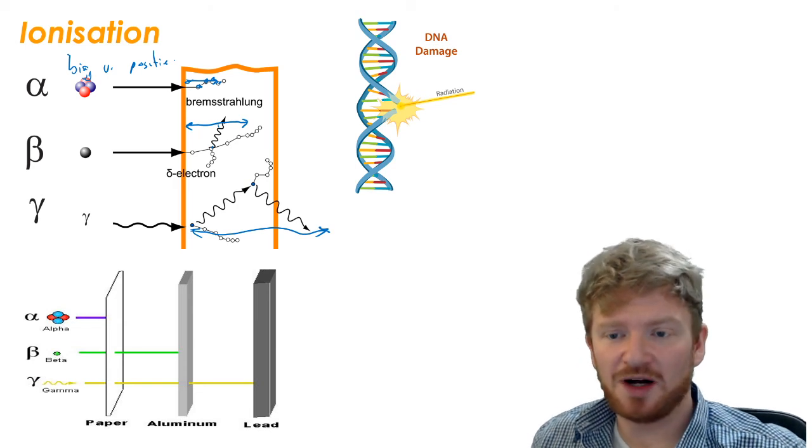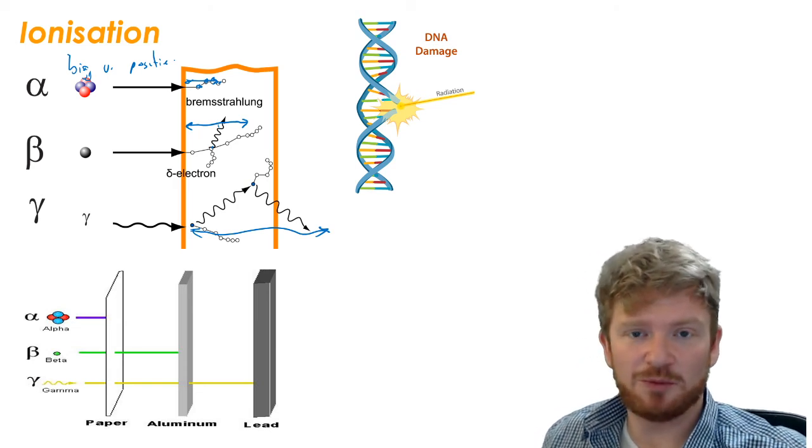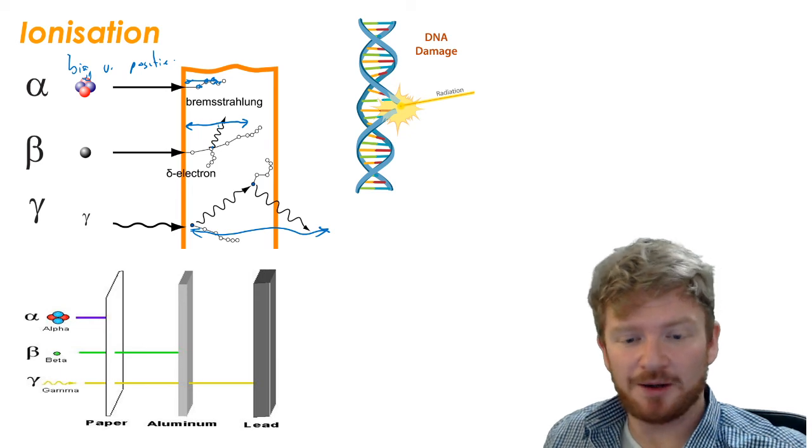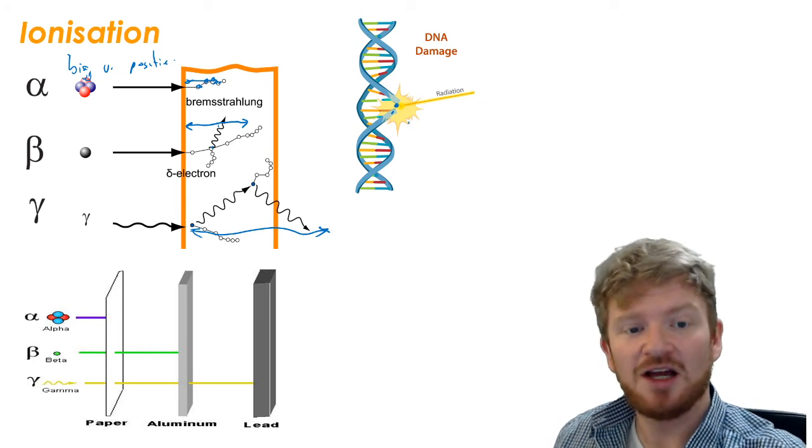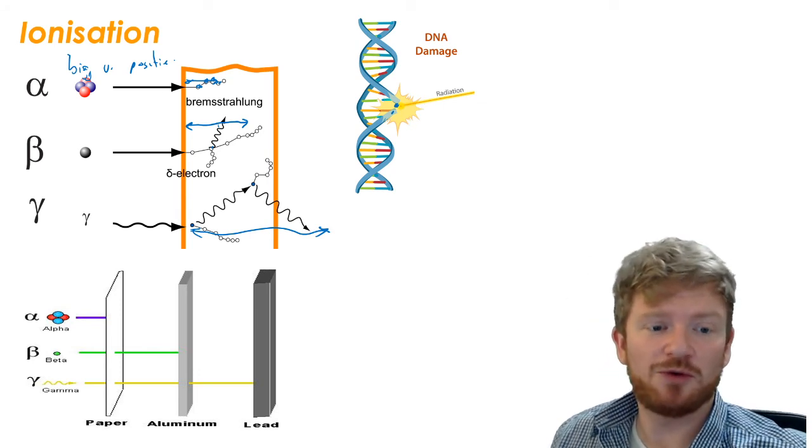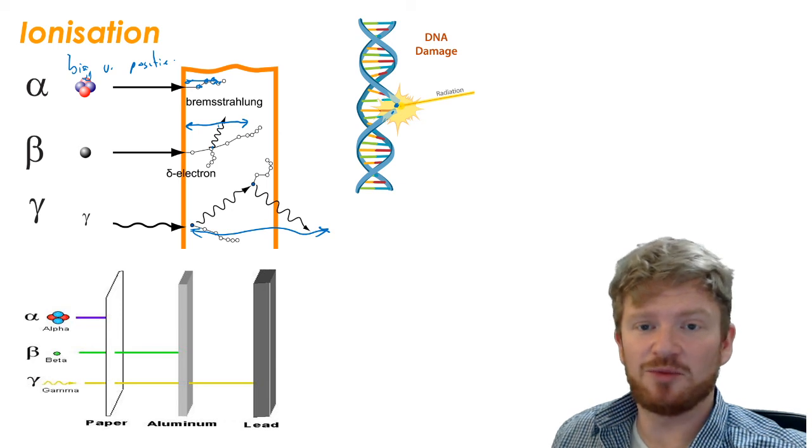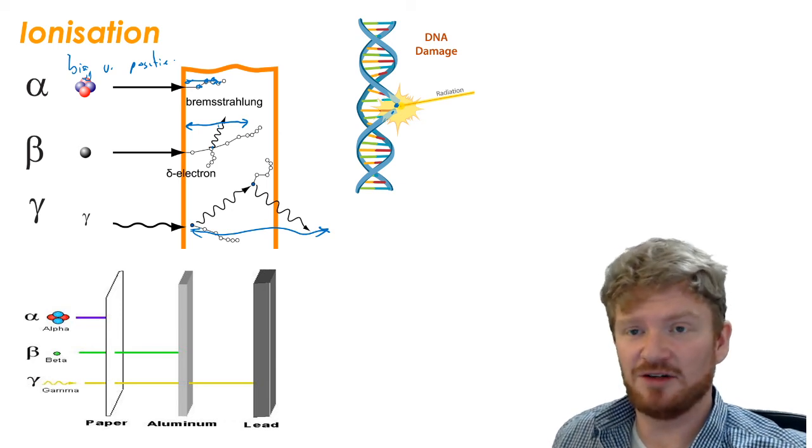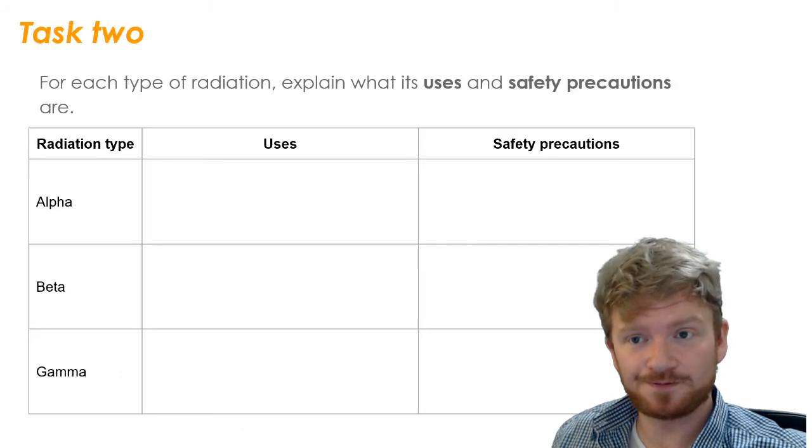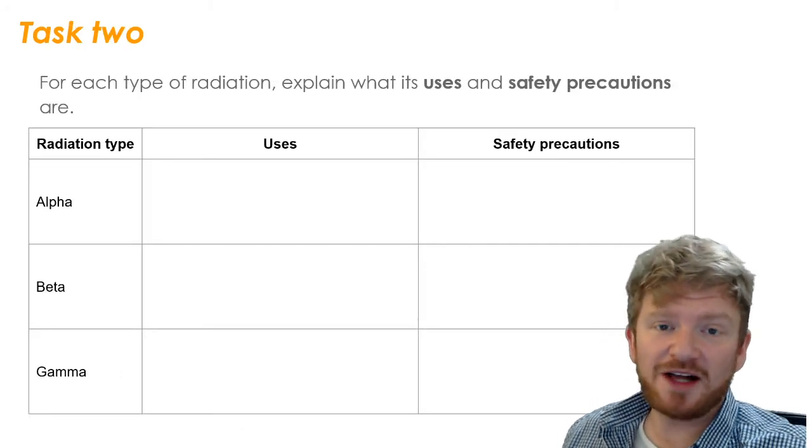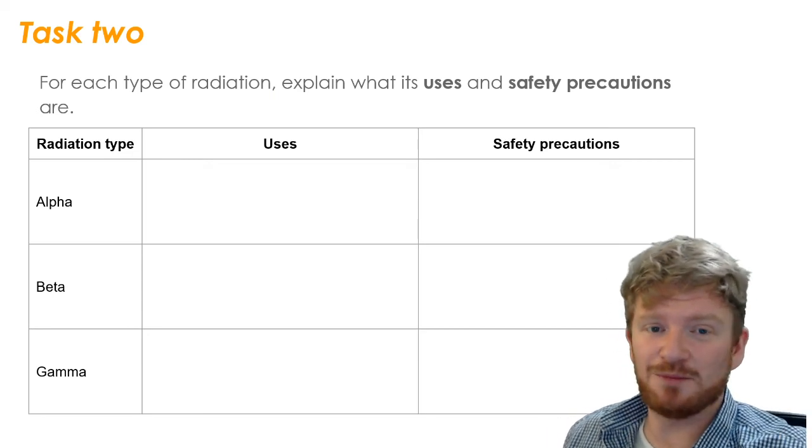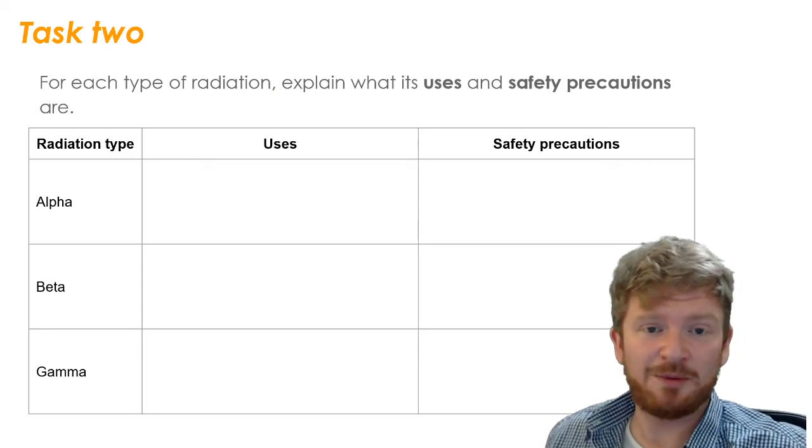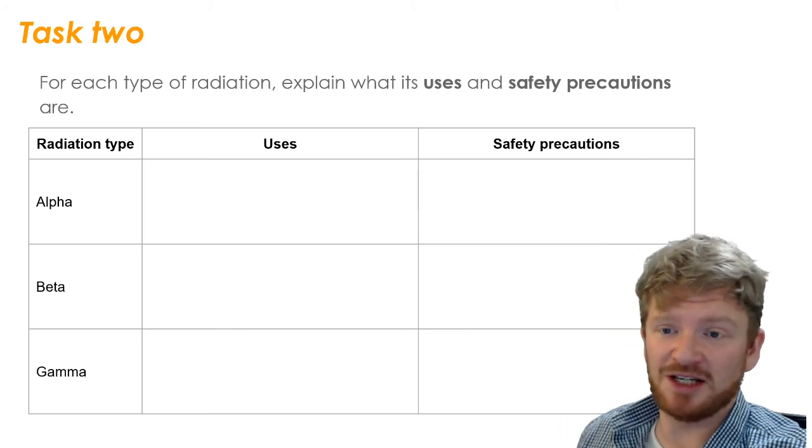So that's the idea of why alpha, beta and gamma can be stopped by different things. And again, just a little recap. If we are causing ionization in your DNA, so we're changing the chemical structure of your DNA, that can cause problems for you health-wise because it can disrupt the way that your cells normally work. So that's why ionizing radiation is dangerous. So the fact that radiation is ionizing is really useful for a variety of medical and industrial applications. But also obviously has serious safety implications.